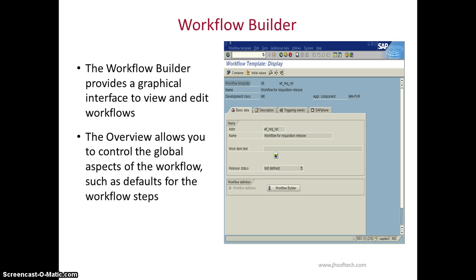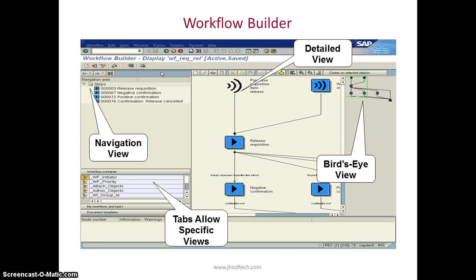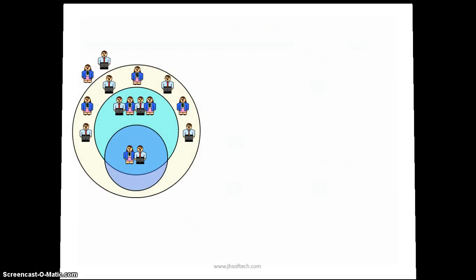The Workflow Builder uses transaction code SWI1/WDD. It provides a graphical interface to view and edit workflows. The overview allows you to control global aspects of the workflow such as default workflow steps. There is a navigation view on the left side and a detailed view on the right side. The bird's eye view shows the entire workflow when it may not be fully visible in the detail view. Tabs allow specific views, and you can drag and drop workflow containers from the container view into the detail view and write logic for them.